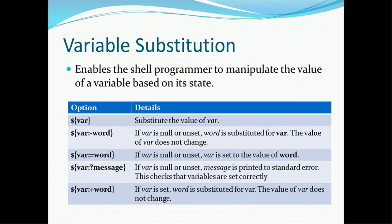The third option is `${var:=word}`. This means if var is null or unset, var is actually set to the value of word. If you compare option 2 and option 3, in option 2 word is substituted for var without changing it, while in option 3 we are actually setting the value to be equal to word. We'll see all of this in actual examples.